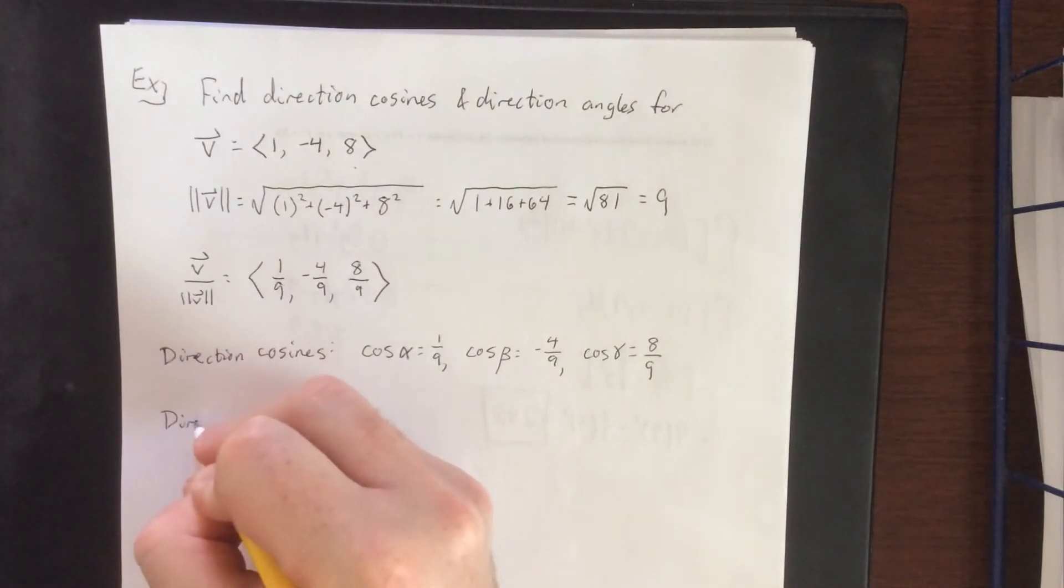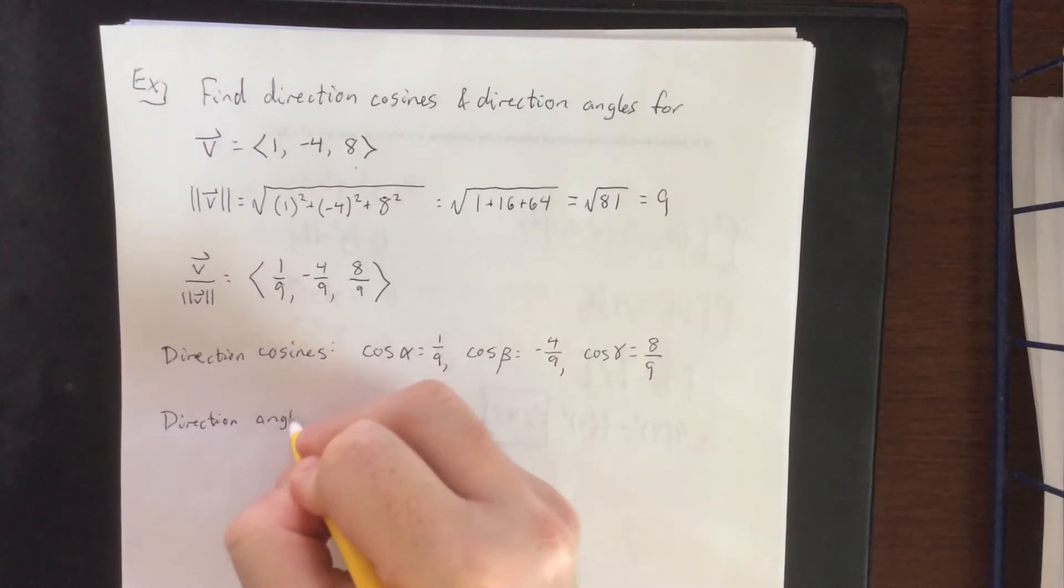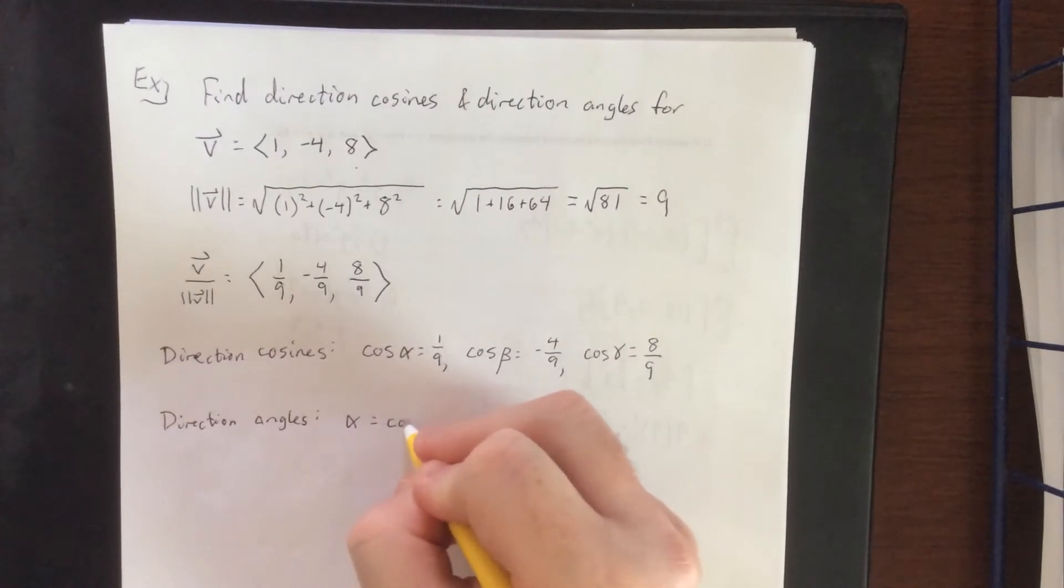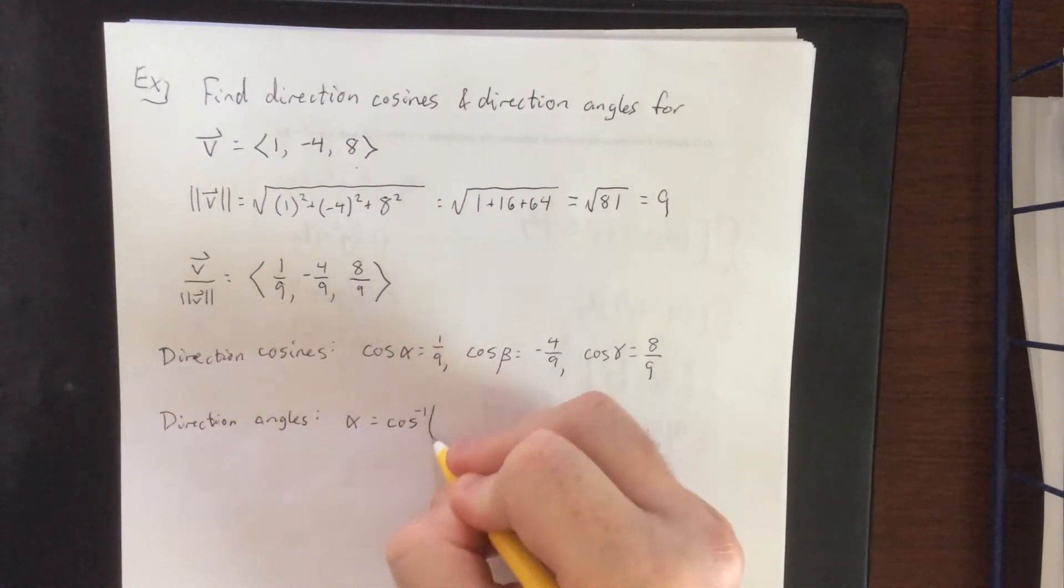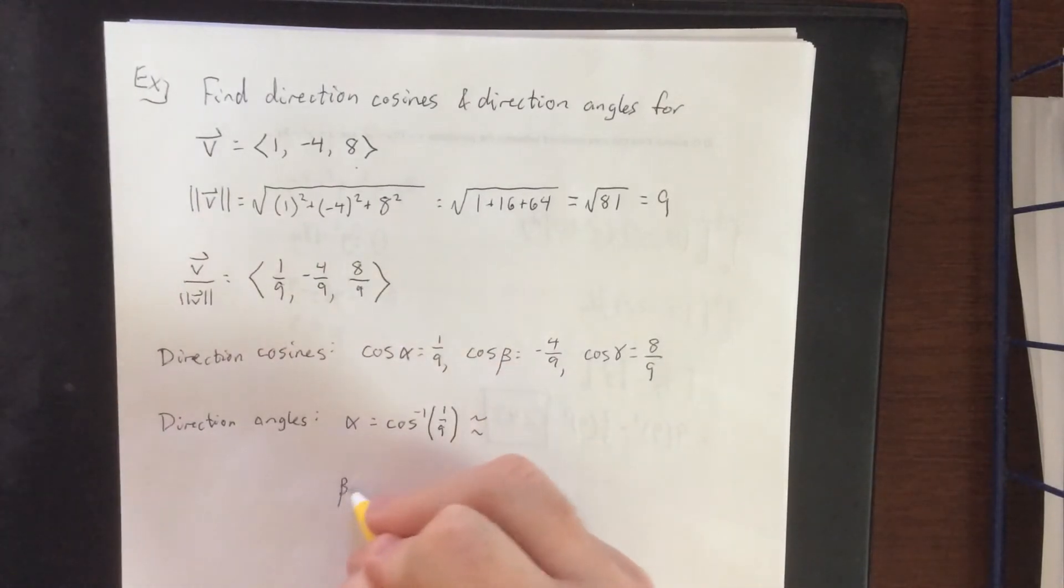For the direction angles, we will need some arc cosines. We'll do both an exact form as well as an approximated form. Alpha will be the arc cosine of 1/9, and we'll get an approximation for that in just a moment.